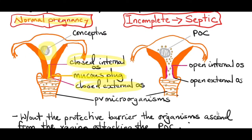However, when a miscarriage happens and it ends up as an incomplete miscarriage, the mucus plug has fallen out so there is no protective barrier and the cervix is also open. So the vaginal microorganisms start to ascend into the uterus and the first thing they attack is the products of conception, which is no longer a viable conceptus.